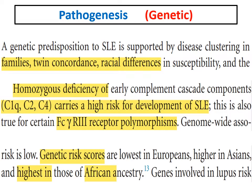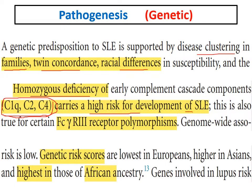There is a genetic element in the pathogenesis of systemic lupus, evidenced by disease clustering in families, increased twin concordance, and racial differences. There is an increased risk for lupus in patients with homozygous deficiency of C1q, complement 2, and complement 4. Certain polymorphisms also increase risk, such as the Fc gamma receptor 3 polymorphism. Genetic susceptibility is lowest in Europeans, higher in Asians, and highest in African ancestry populations.